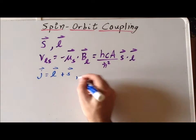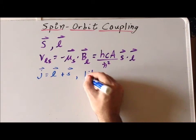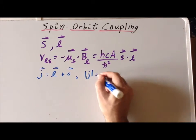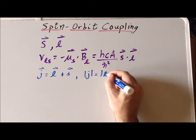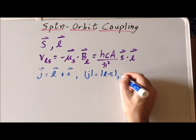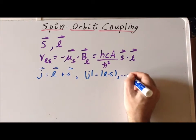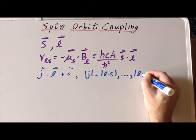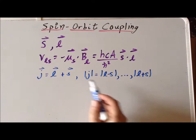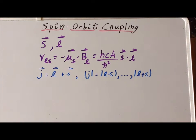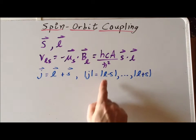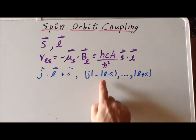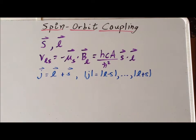We also recall that the magnitude of J will go from L minus S, and then we increase by ones, up to the absolute value of L plus S. So this is the magnitude of the total angular momentum in terms of the magnitudes of the orbital angular momentum and the spin angular momentum.